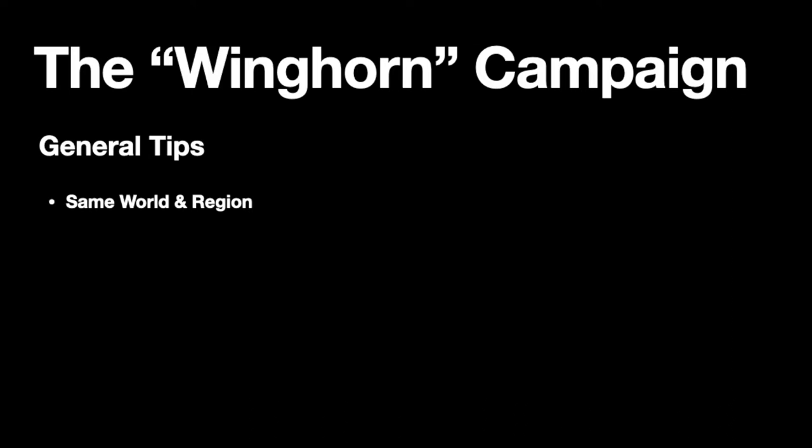First, let's discuss some general tips about linking one-shots. They all need to take place in the same campaign world, and in the same region of that world, since our PCs are going to be low level and therefore not have access to globetrotting magic and technology. And they should all be leveling sequentially, or you need to adjust the encounters so they work out that way. We're going to link these four adventures so they start at level one and end at level five, so we'll need to provide the connective tissue — the main thing that turns this into a campaign.